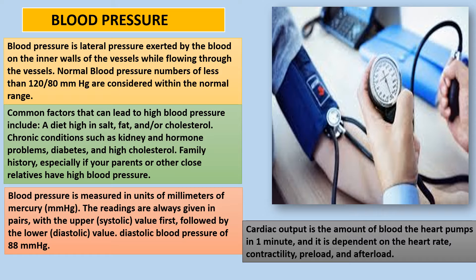Common factors that can lead to high blood pressure include a diet high in salt, fat, and/or cholesterol; chronic conditions such as kidney and hormone problems; diabetes and high cholesterol; and family history, especially if your parents or other close relatives have high blood pressure. Blood pressure is measured in units of millimeters of mercury (mmHg). Readings are always given in pairs, with the upper or systolic value first, followed by the lower or diastolic value.